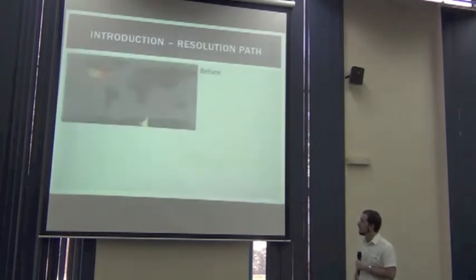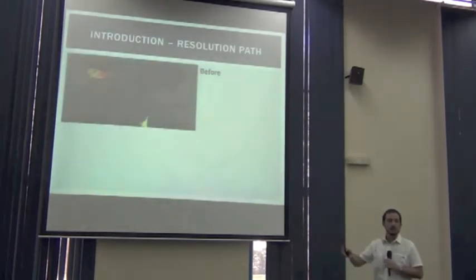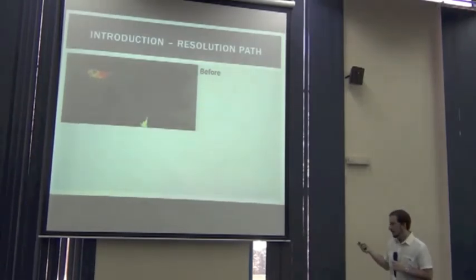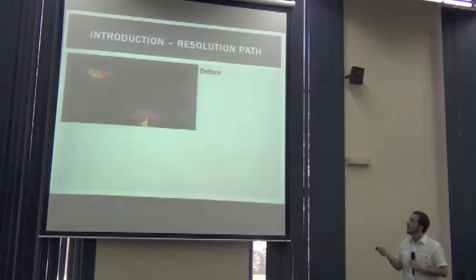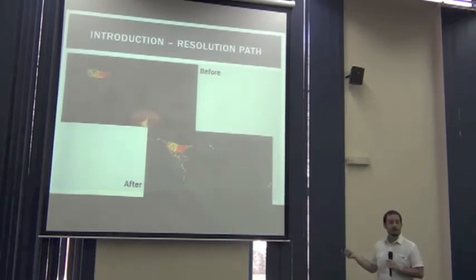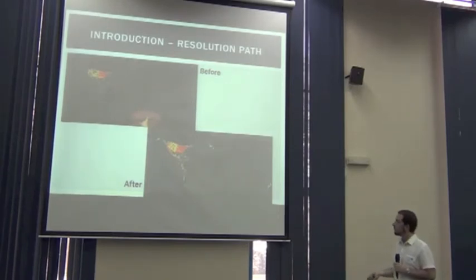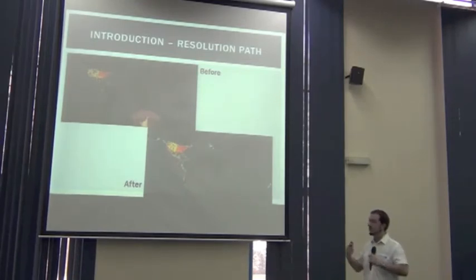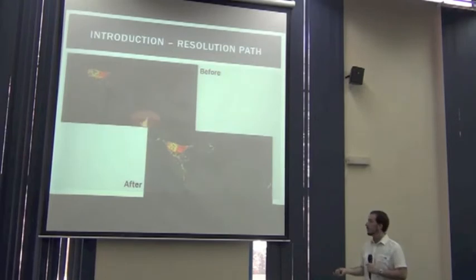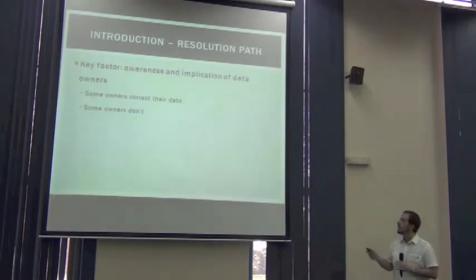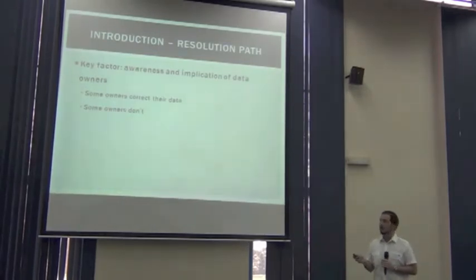When the index is updated, it updates the cache and then the issues we have seen previously won't appear anymore. This has happened before. In the example of the transposition we saw, what I showed you was an old version of that collection. Somewhere around 2009, they were aware of this problem, solved it, and changed the coordinates. But this is something the publisher had to do — we could tell them something was wrong, but they are the ones who have to make the change. The key factor here, and one bottleneck, is the awareness and involvement of data owners.